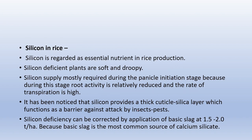Regarding silicon in rice: silicon is regarded as an essential nutrient in rice production. Silicon-deficient plants are soft and droopy. The requirement for silicon is highest at the panicle initiation stage, because at that stage root activity slows down and transpiration rate increases. Silicon provides a thick cuticle-silica layer which functions as a barrier against attack by insects and pests. Silicon deficiency can be corrected by applying basic slag at 1.5–2.0 tons per hectare, as basic slag is the most common source of calcium silicate.